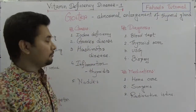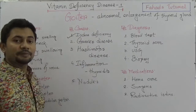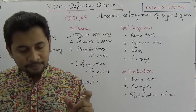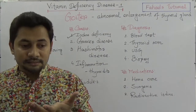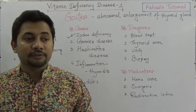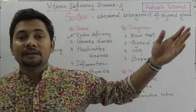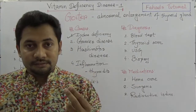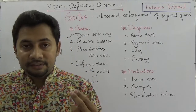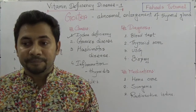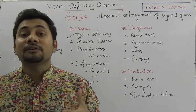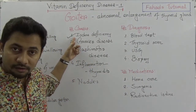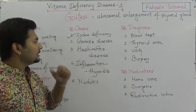The first and most important cause of goiter is iodine deficiency. Due to lack of iodine in daily food — especially in Bangladesh, in northern or hilly areas where iodized edible salt is lacking — people develop this enlargement of the thyroid gland. So iodine deficiency is a main cause of goiter.